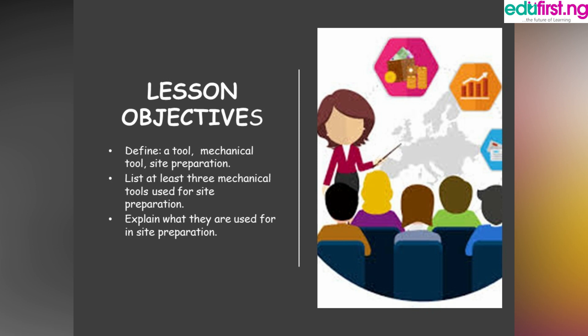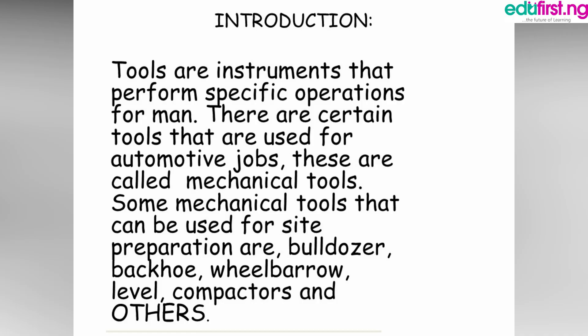Lesson objectives: by the end of this lesson, learners should be able to define the following — a tool, a mechanical tool, and site preparation. They should also be able to list at least three mechanical tools used for site preparation and explain what they are used for.